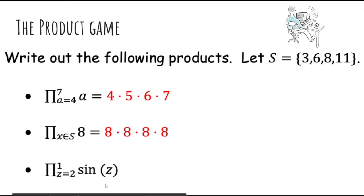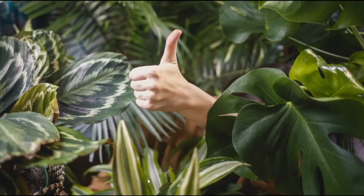Similarly, this is an empty product because we start z is equal to 2, but we should have already stopped at 1. So therefore, this is an empty product, but here the product is 1 because the multiplicative identity is 1. Thank you.